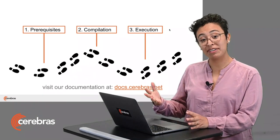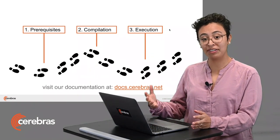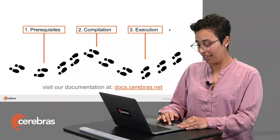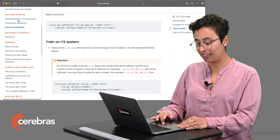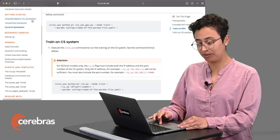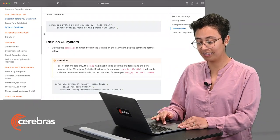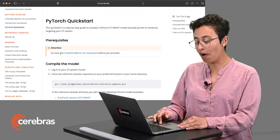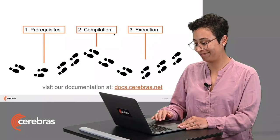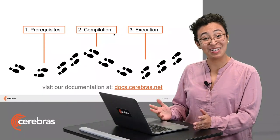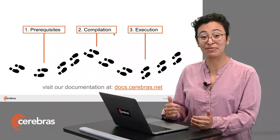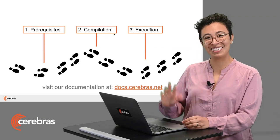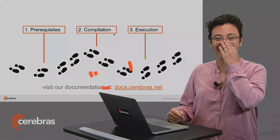Remember that all of these steps can be found in our documentation at docs.cerebras.net. There you will find a checklist before you quick start, as well as a PyTorch quick start, covering all of the steps we talked about today. Thank you so much for being with me to learn prerequisites, compilation, and execution on a Cerebras system.